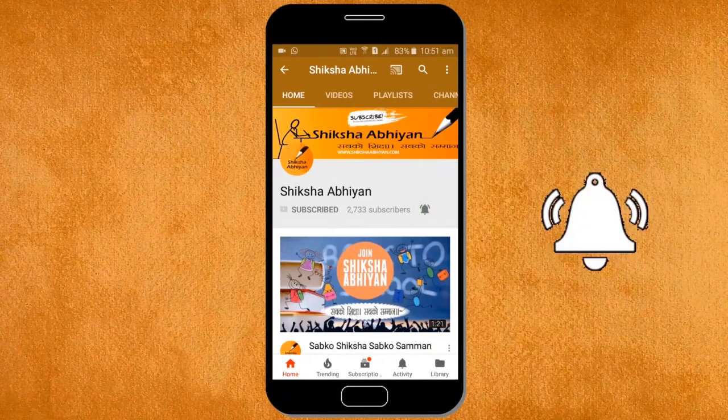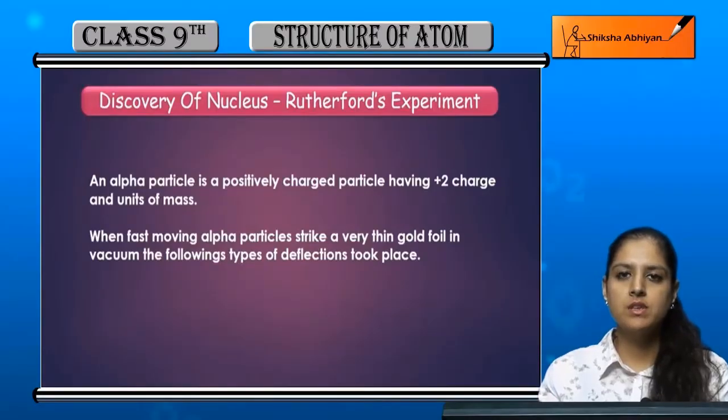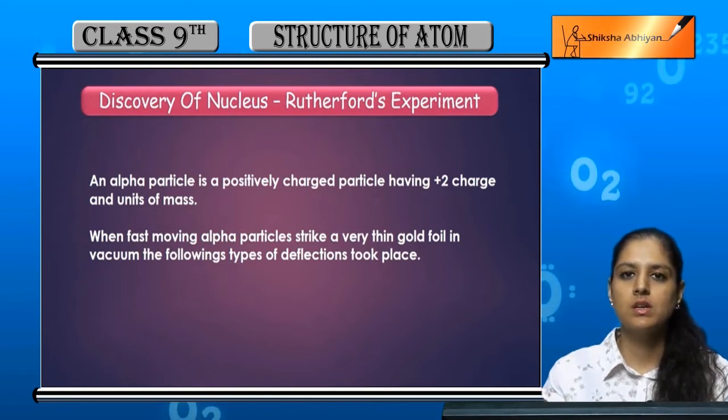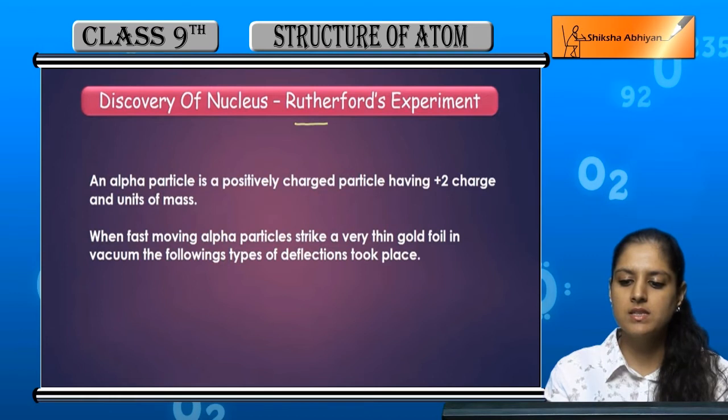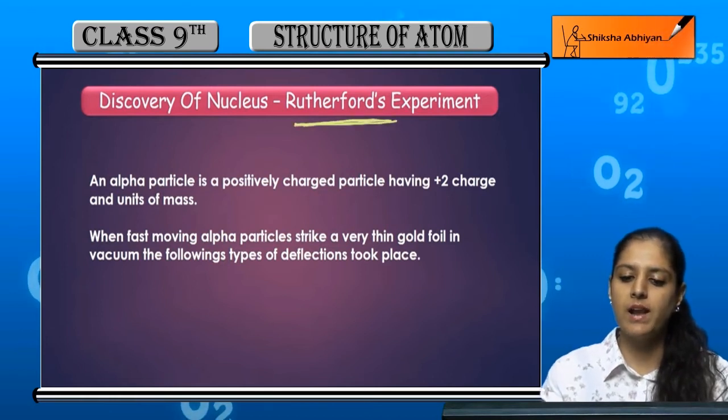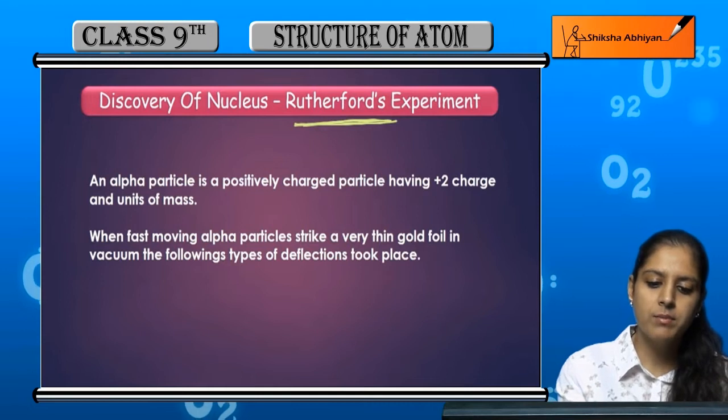Now we have discovery of nucleus - electrons, protons, and neutrons. There was a time to discover nucleus and it was discovered by Rutherford's experiment. Rutherford had conducted an experiment with alpha particles.